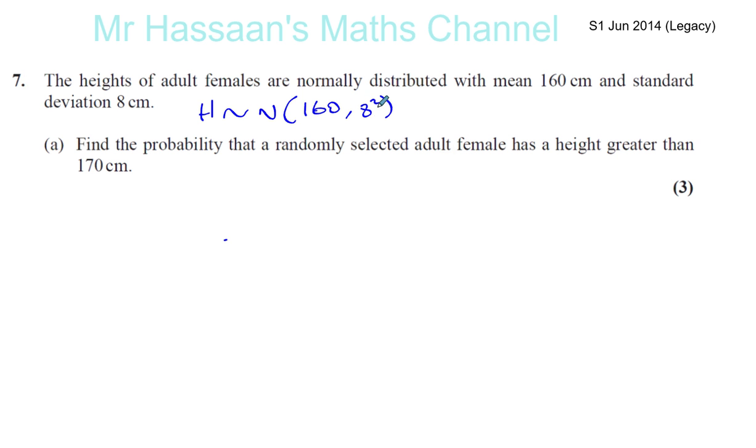Okay, that's how you show that, right? Okay, that's in there. So find the probability that randomly selected adult female has a height greater than 170.